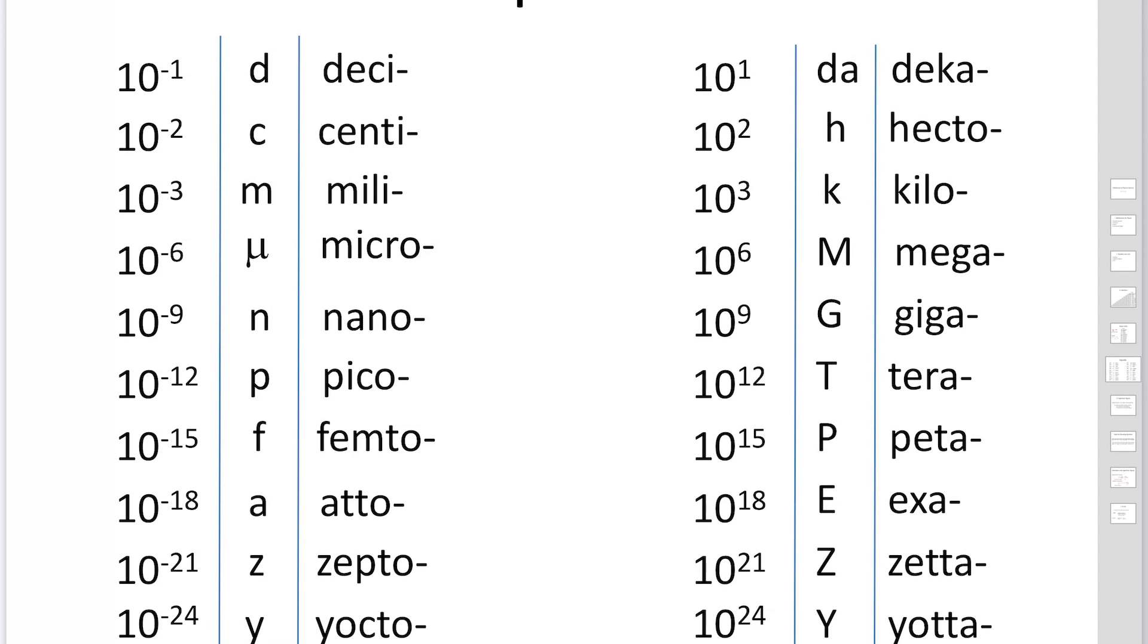For big numbers, deca is 10, hecto is 100, kilo is 1000, mega is 10 to 6, giga is 10 to 9, and tera, peta, exa, zetta, and yotta.